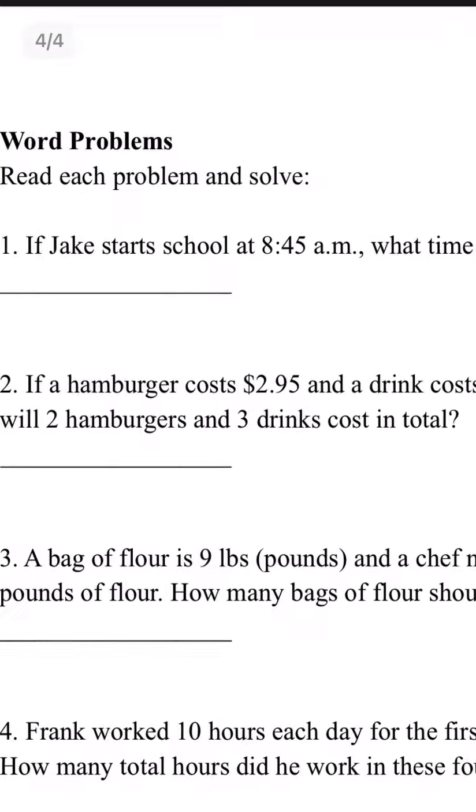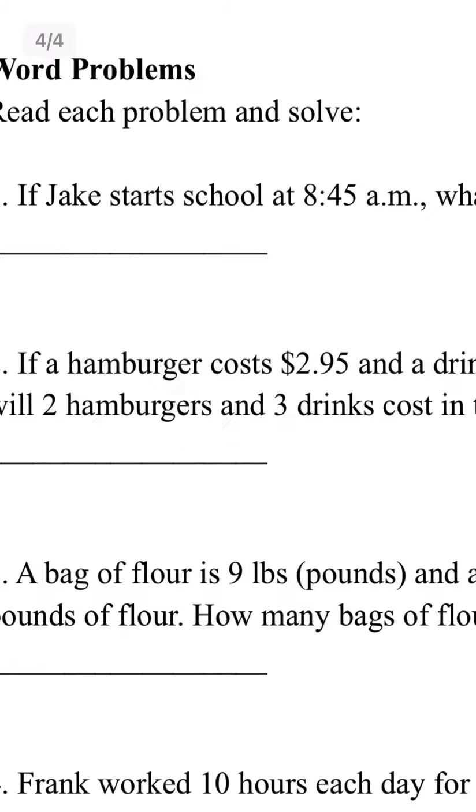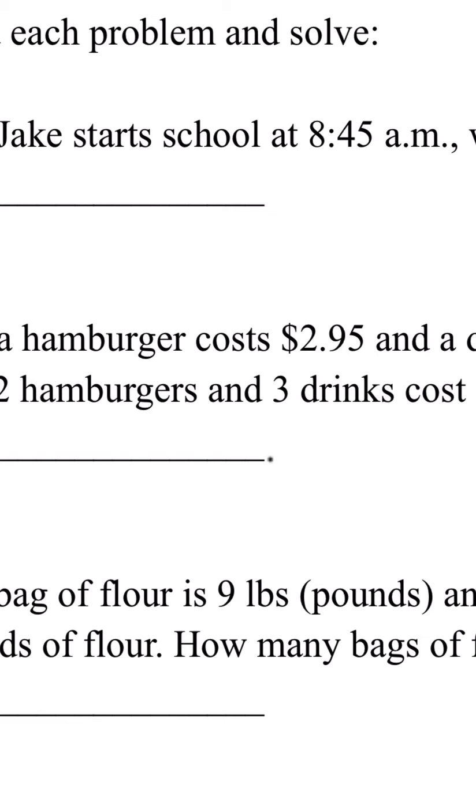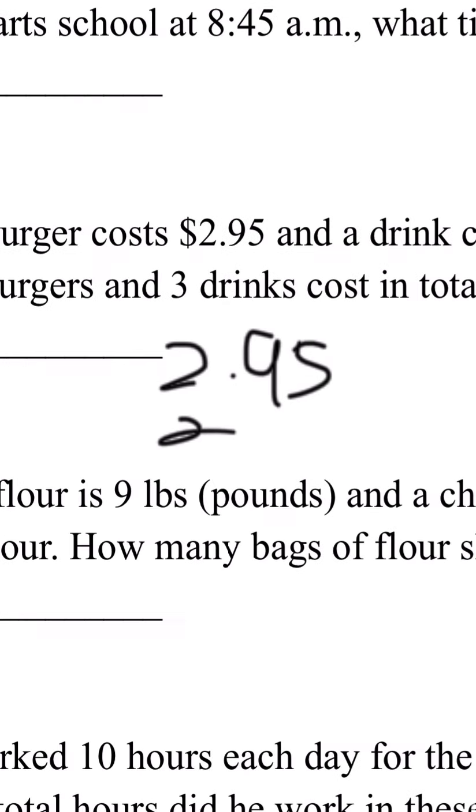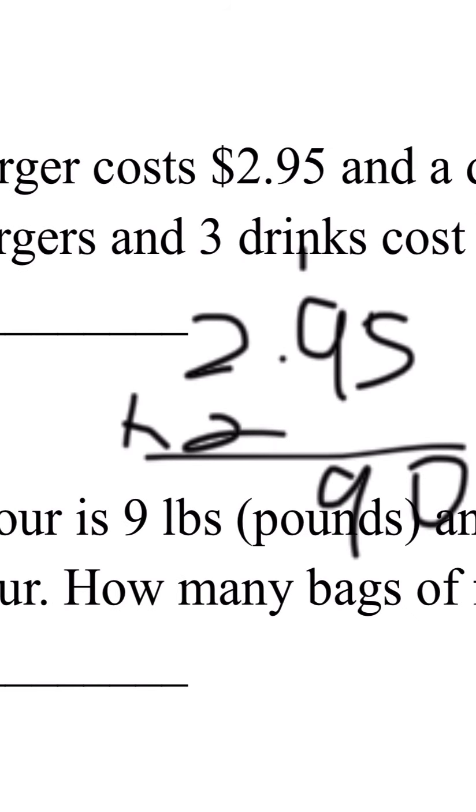We need to find the hamburger cost and add them together. Let's find hamburger cost first: $2.95 times 2. 5 times 2 is 10. 0.9 multiplied by 2 is 1.8. 2 times 2 is 4, plus 1 is 5. Hamburger cost is $5.90.